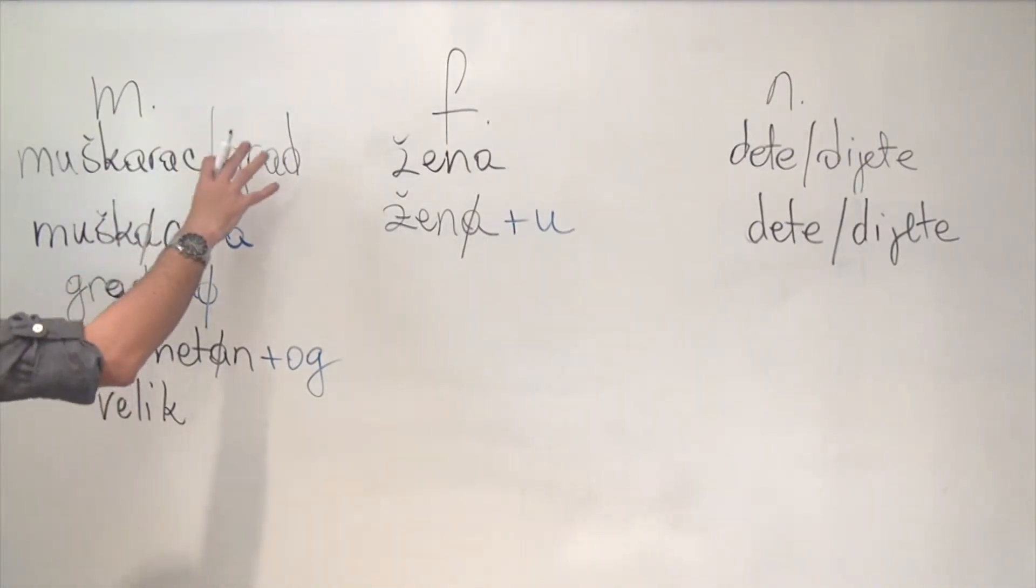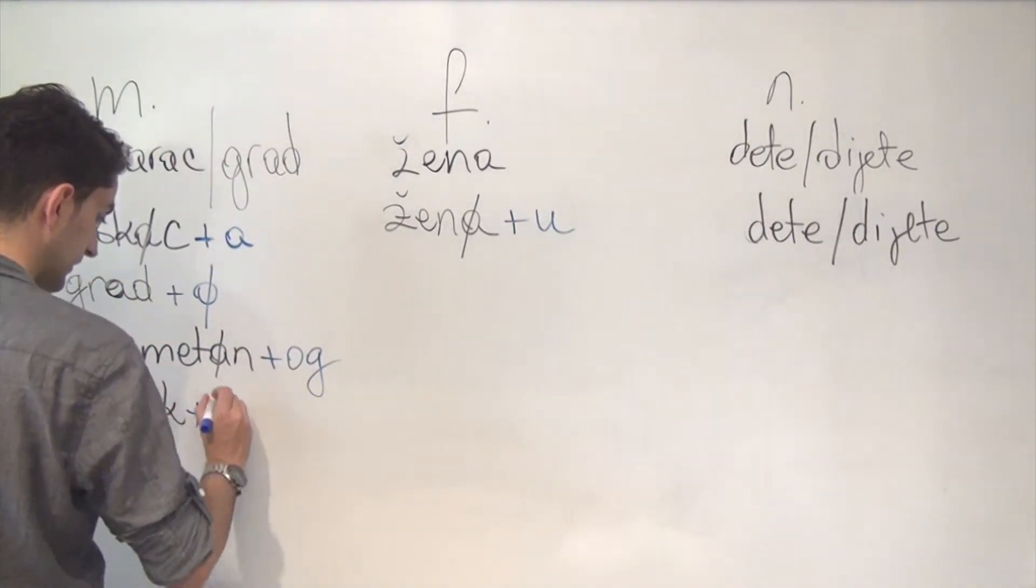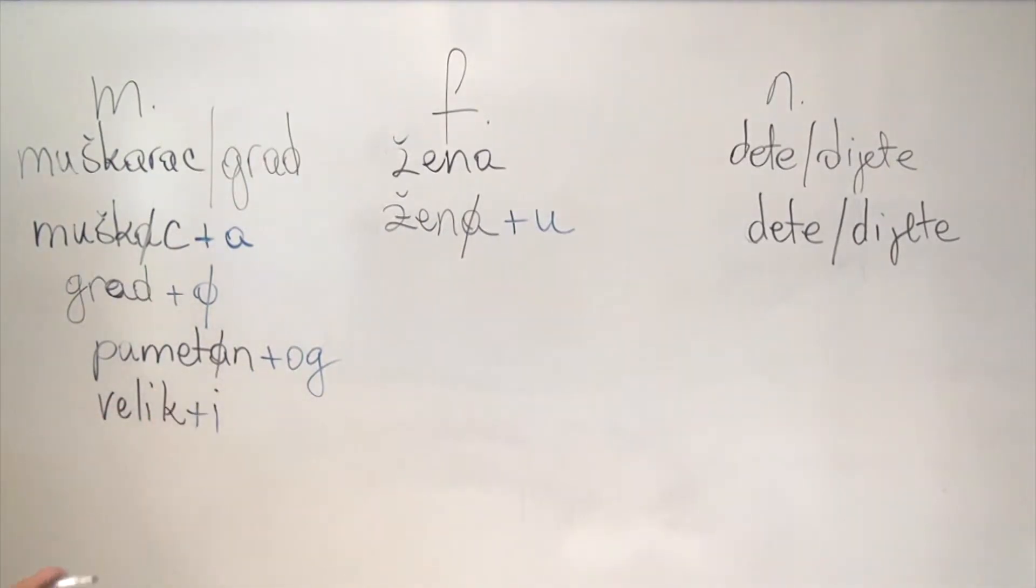Now, with inanimate nouns, the only suffix that this adjective will get, if it's not already there, is Veliki, which is this long E. And what you get in the end is Pametnog Muzkarca or Veliki Grad.